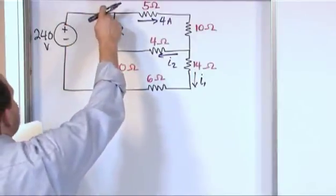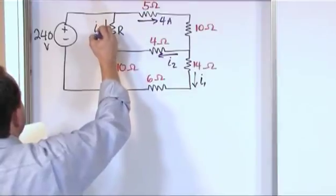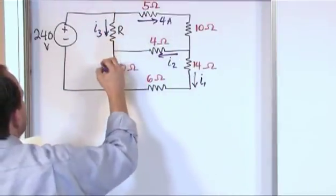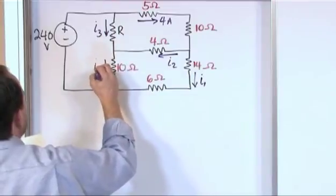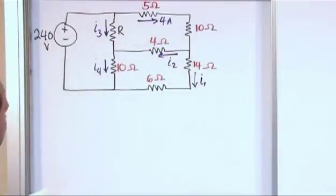Now when the current hits this node here, most likely some is going to come down here. So we'll call it I sub three. And then when we get here, you're going to get a junction of current here. We'll call this I sub four. And let's just see what we need to find. I mean, I don't really know.